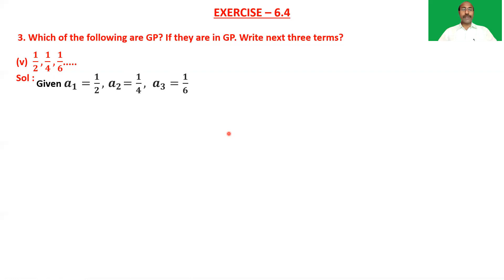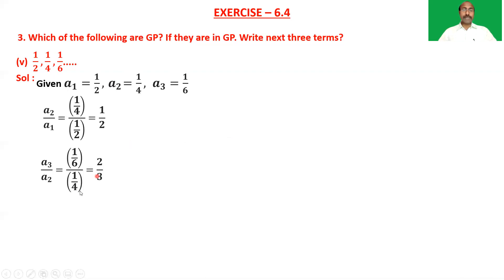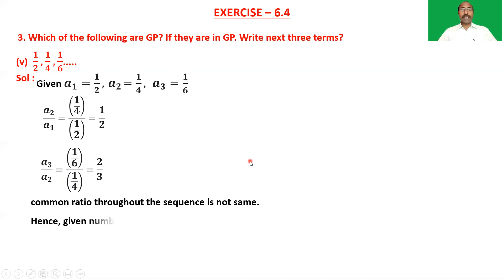Fifth sequence: 1/2, 1/4, 1/6, and so on. a₁ = 1/2, a₂ = 1/4, a₃ = 1/6. a₂/a₁ = (1/4)/(1/2) = 1/2, but a₃/a₂ = (1/6)/(1/4) = 4/6 = 2/3. The common ratio is not the same, so the given numbers are not in GP.